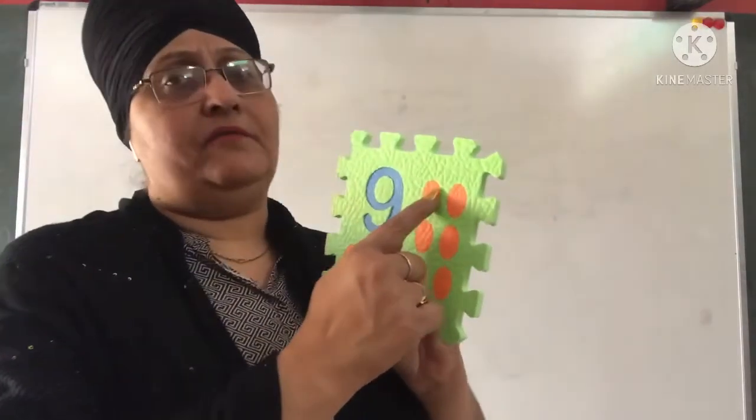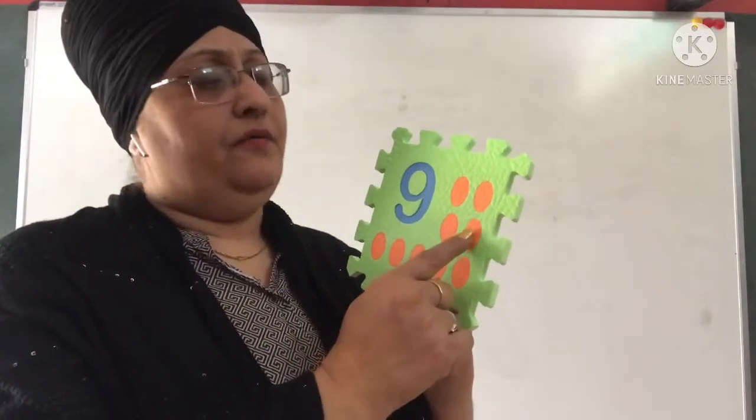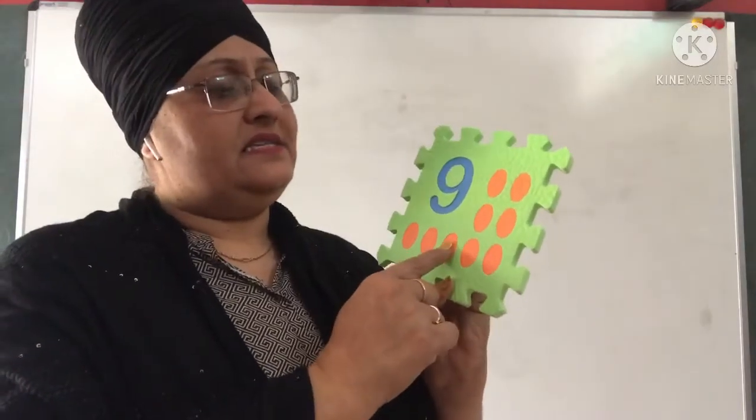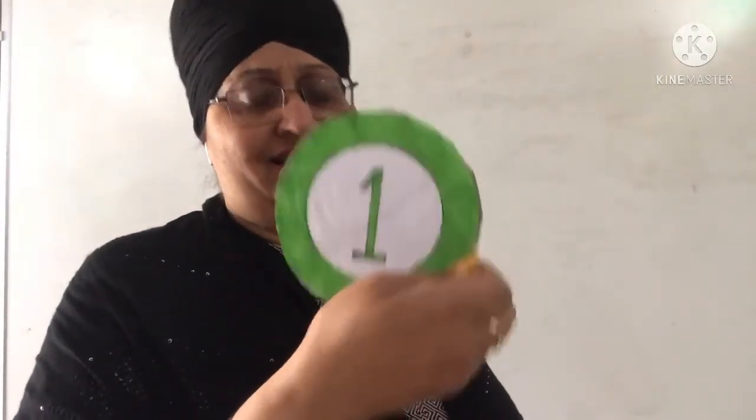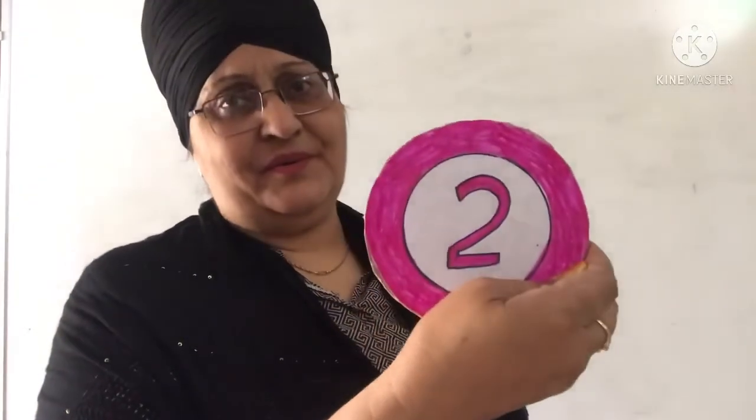Now you count with me: 1, 2, 3, 4, 5, 6, 7, 8, 9. Now it is practice time: 1, 2, 3, 4, 5, 6, 7, eight, eight, nine, nine. These are numbers one to nine.